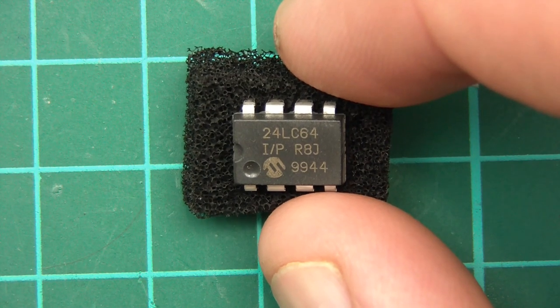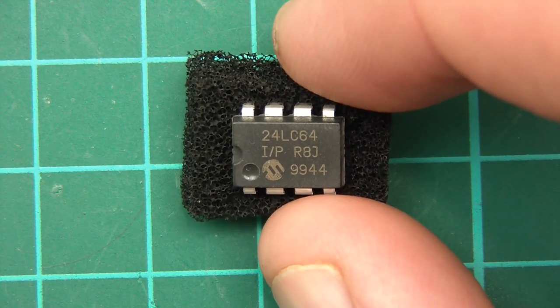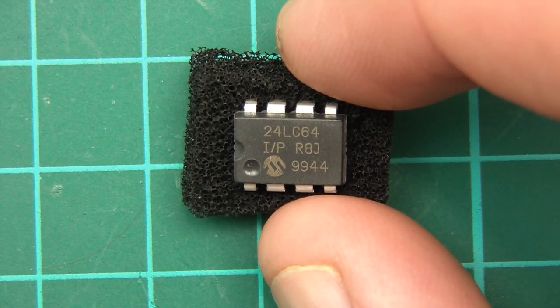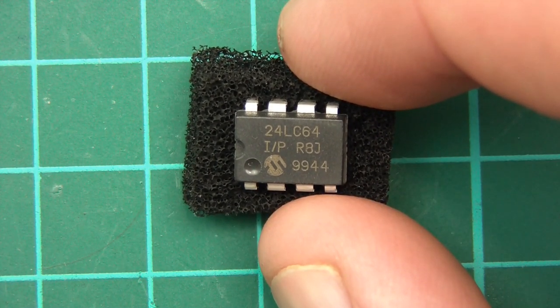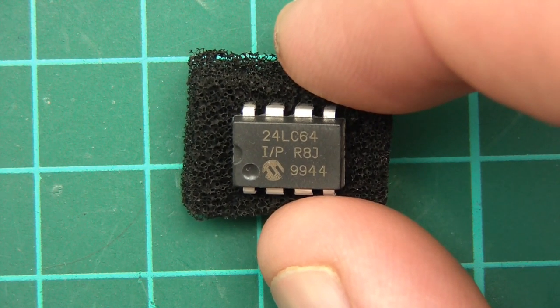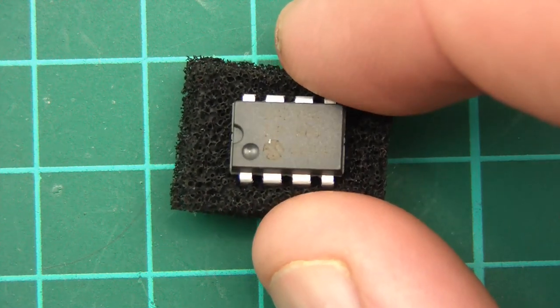Now, of course, 64,000 bits isn't incredibly useful to us, because we work in bytes. So essentially, if you get 64 and divide by 8, it's 8. Yeah, 8 times 8 is 64, so yeah, it's 8,000 bytes, 8 kilobytes.